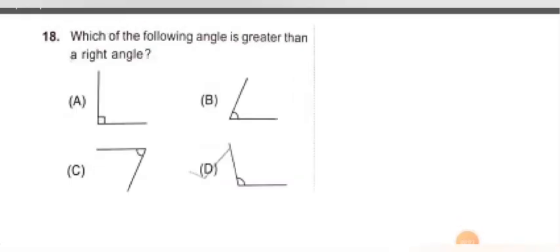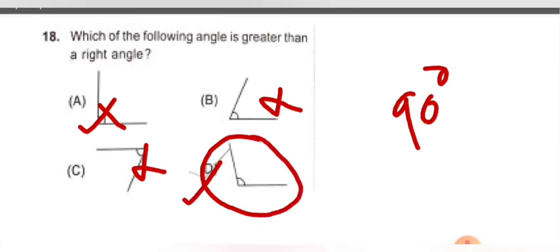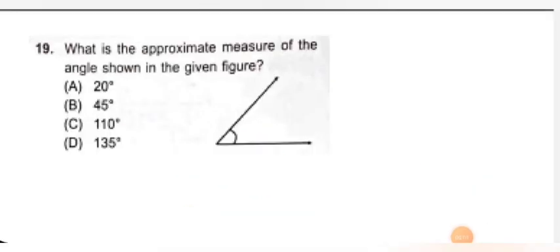Next question: which of the following angles is greater than a right angle? Right angle means 90 degree. This is 90 degree — that option is wrong. This is less than 90 degree — also wrong. This is less than 90 degree — also wrong. This is greater than 90 degree, means option D is correct.